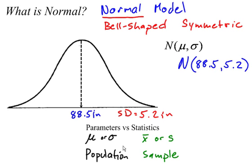So you should always use the right notation. If I'm talking about a normal model, that is a model of the population. So this 88.5 should be labeled as mu because it represents the population, and the 5.2 is sigma because it represents the population standard deviation. If I got this from a sample, then I would use x bar and s.